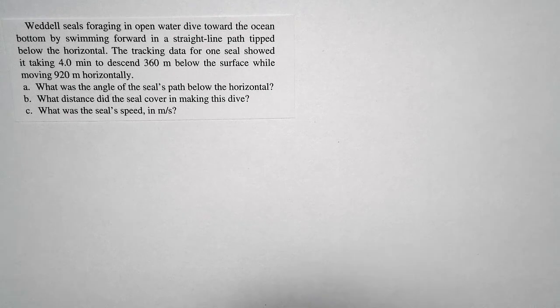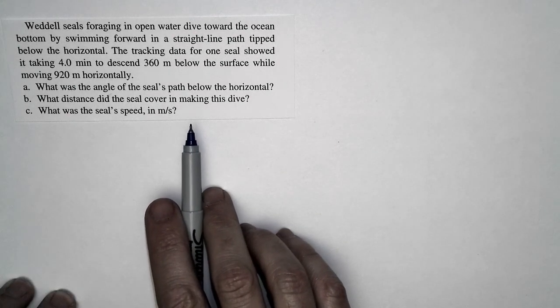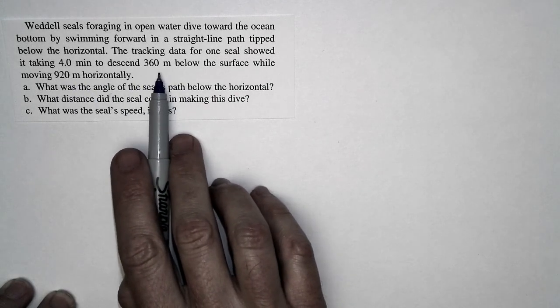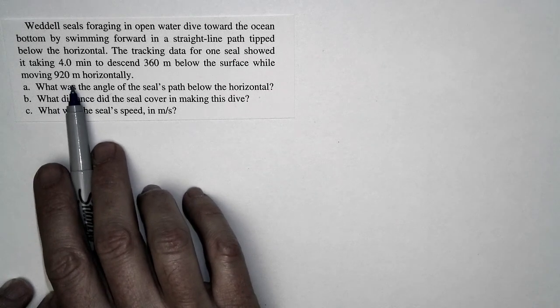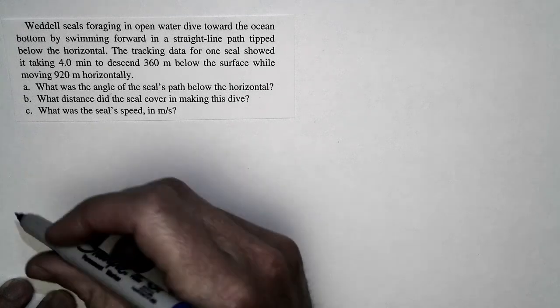The question asks us about seals and how seals swim. This is actual tracking data for a seal. The seal took four minutes to descend 360 meters below the surface of the ocean while it was moving 920 meters horizontally. We're asked some questions about this motion.